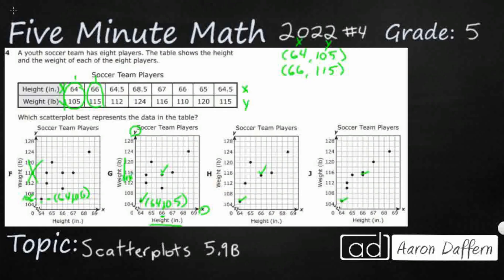Next point: 64.5 and 112. We've got 64 and 65 on the x-axis, so right in between is 64.5. Different scale factors for your x and y axes. So 64.5, and I'm looking for a weight of 112 — right there. All three remaining answer choices are still good.